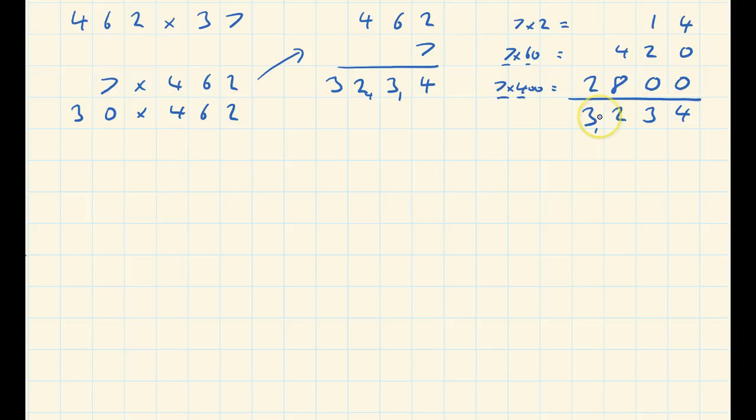So I've done that first bit, but now what I'm going to do is do 462 times by 30. So I've got 462 and I'm going to add my 30. What I would normally do is times 3 by 462 and then add a 0. What I'm going to do here is I'm going to add the 0 first.